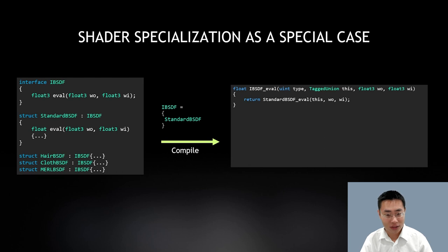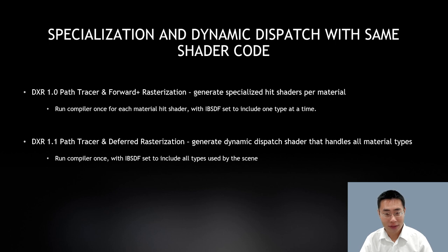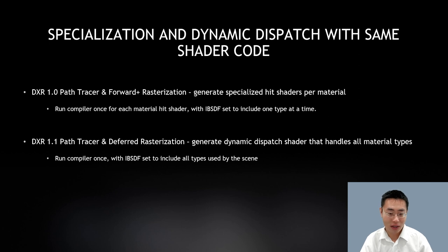Shader specialization is really just a special case under this model — if we tell the compiler that IBSDF can only be one type, Slang generates a simple forwarding dispatch without a switch, producing code similar to the preprocessor-based approach. This is how shader specialization and dynamic dispatch are unified with the same shader code. For DXR 1.0 ray tracing and traditional forward rasterization, the host runs the Slang compiler once per hit shader, specialized to a single material. For DXR 1.1 and deferred shading, it runs once with a list of all material types to produce an uber shader.